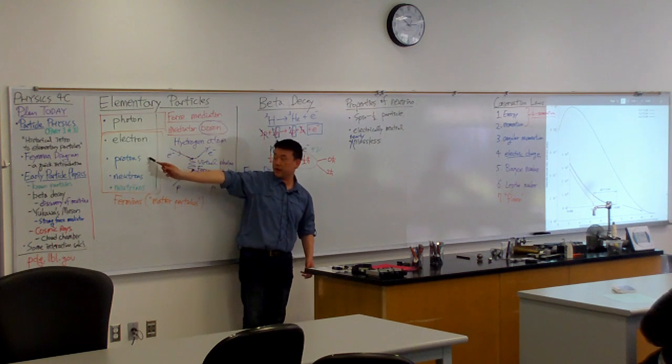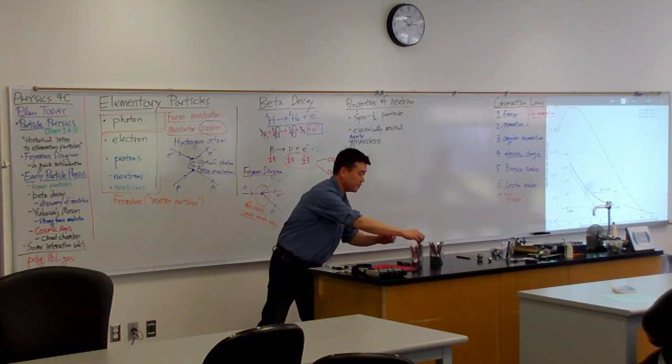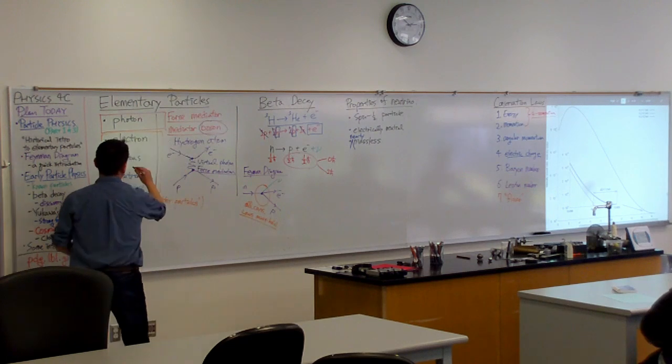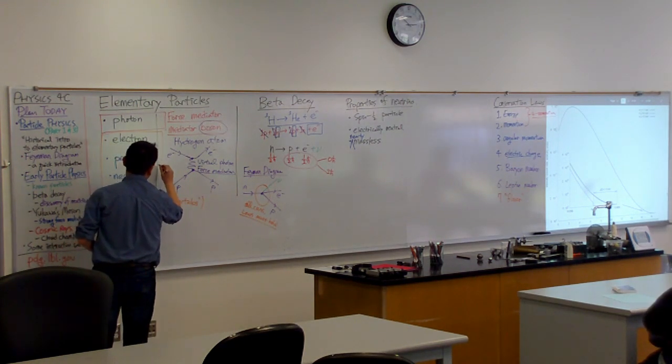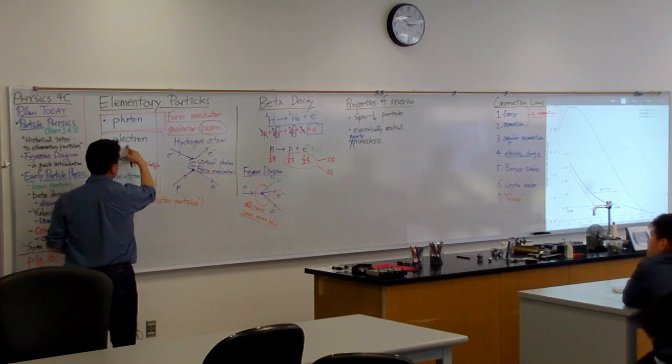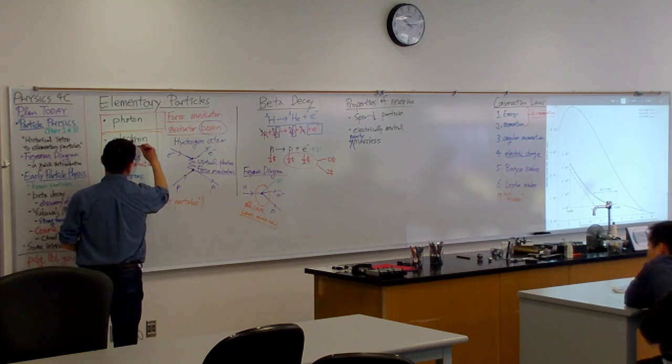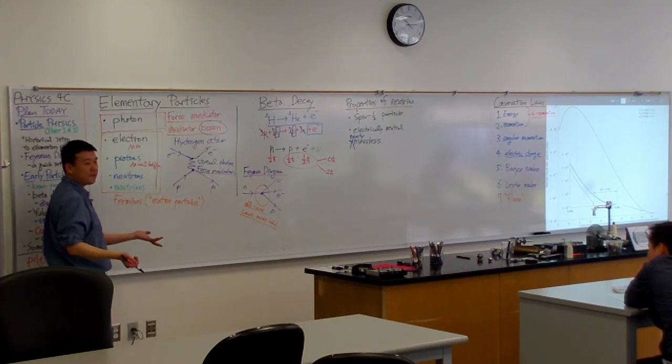Proton has mass of about 1 GeV per C squared. And electron has mass of approximately 0.5 MeV.